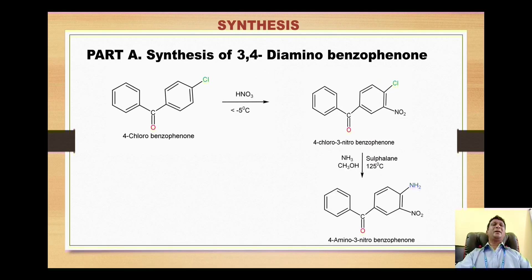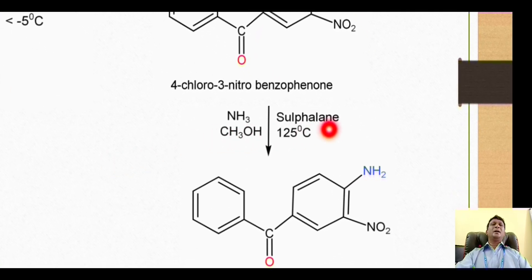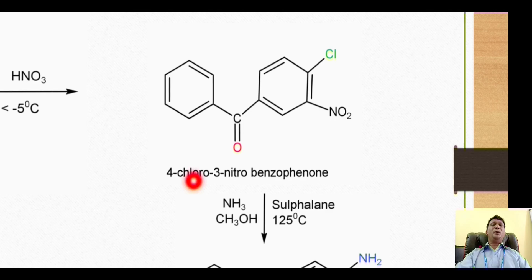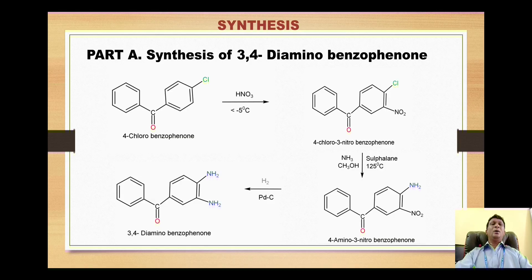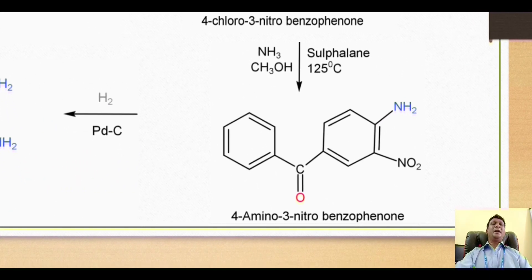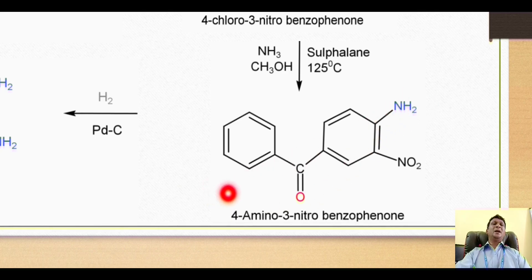This benzophenone derivative then is treated with ammonia in presence of sulfolane at an elevated temperature of 125 degrees centigrade. Methanol is used as a solvent over here. Now the ammonia is nucleophilic in nature so it will attack this carbon to substitute this chlorine from this benzene ring. This is the nucleophilic aryl substitution reaction which takes place by liberation of HCl molecule - one of the hydrogen and this Cl will be removed out as HCl, and then amino group NH2 will get attached at this carbon. So we have formation of this derivative where the amino group had entered at this position, so this derivative is 4-amino-3-nitrobenzophenone.